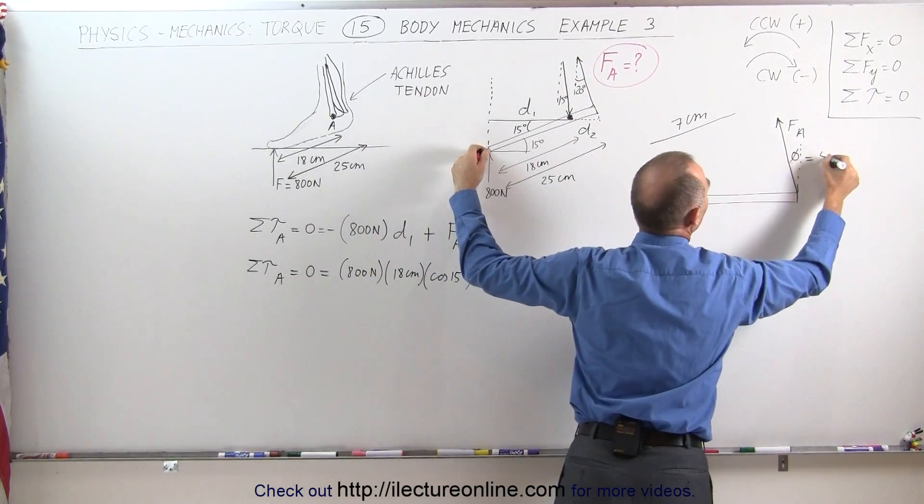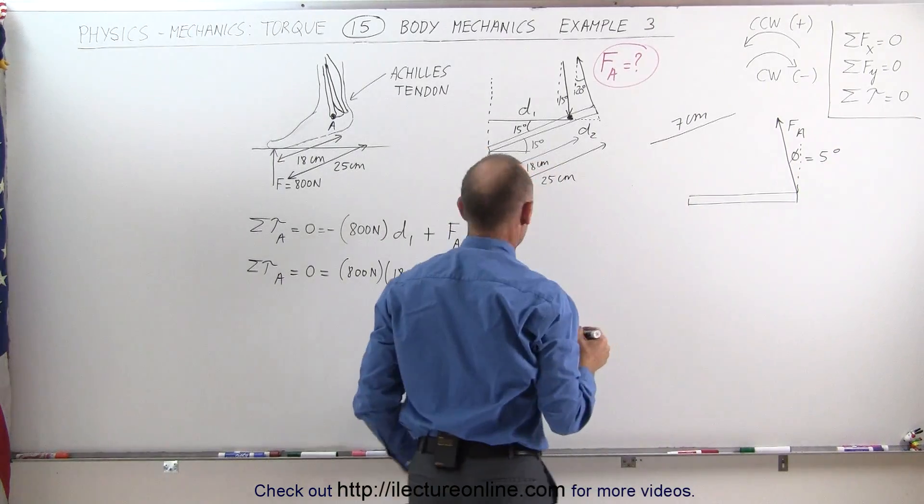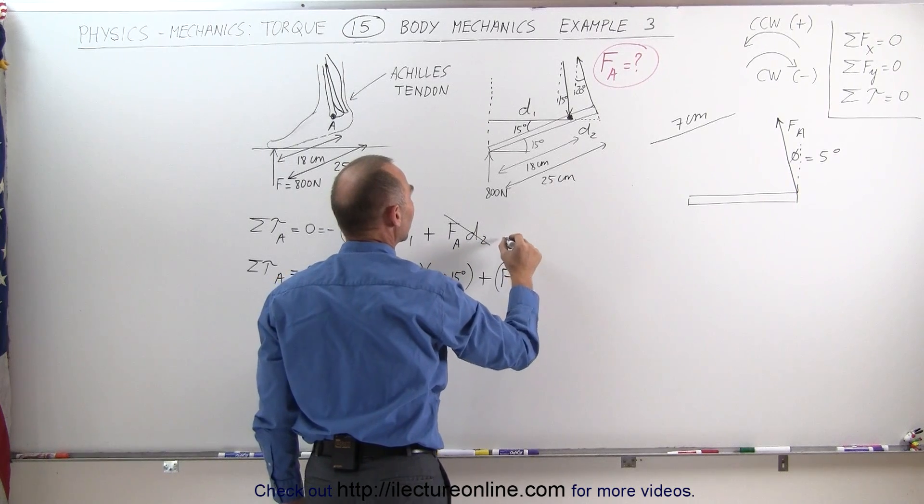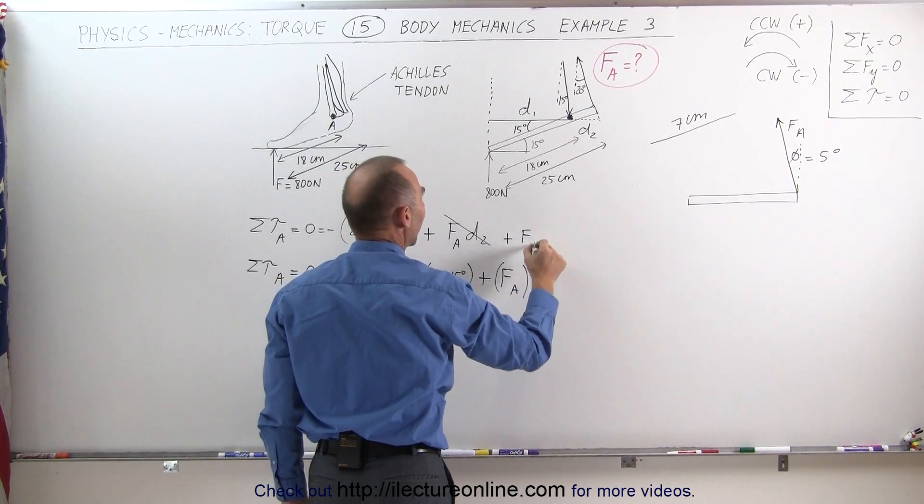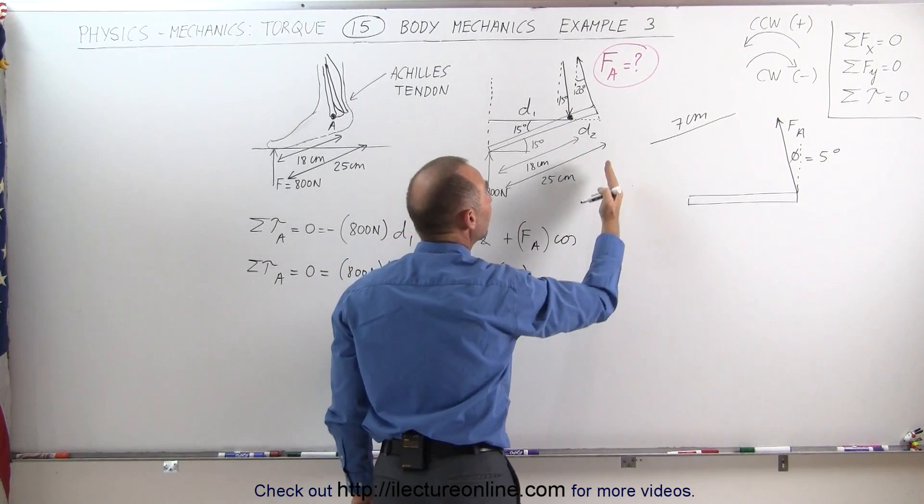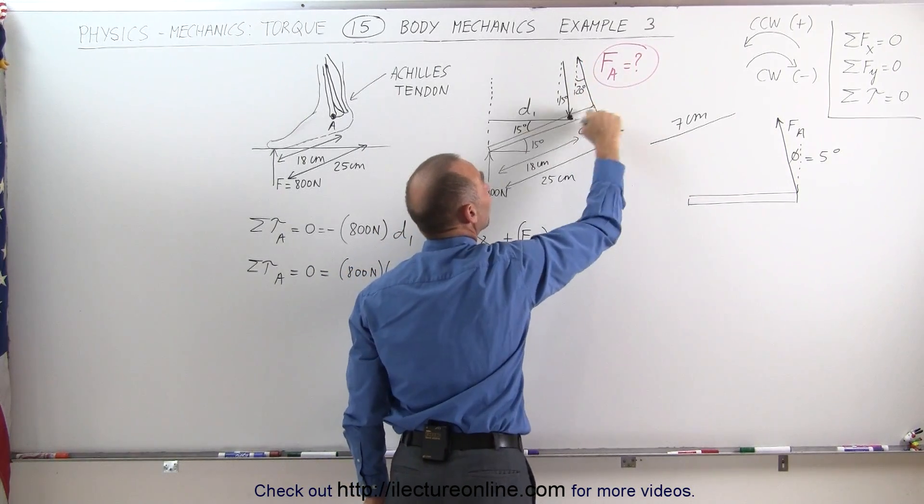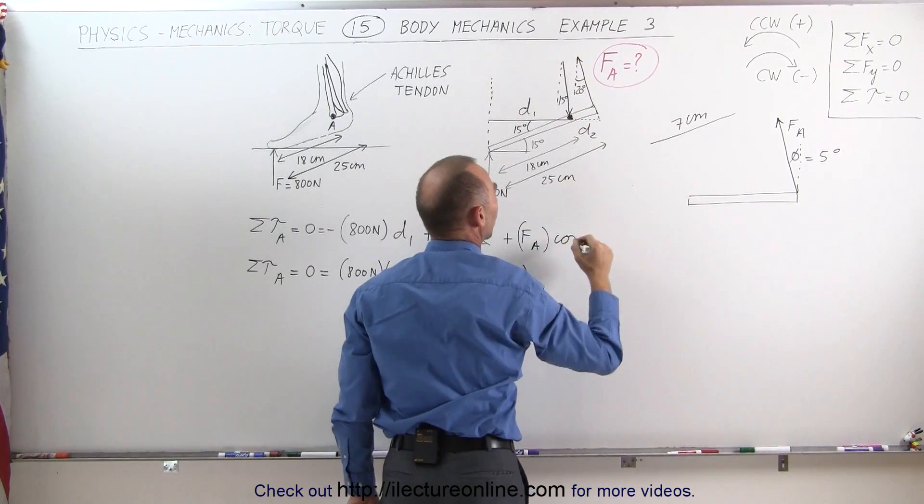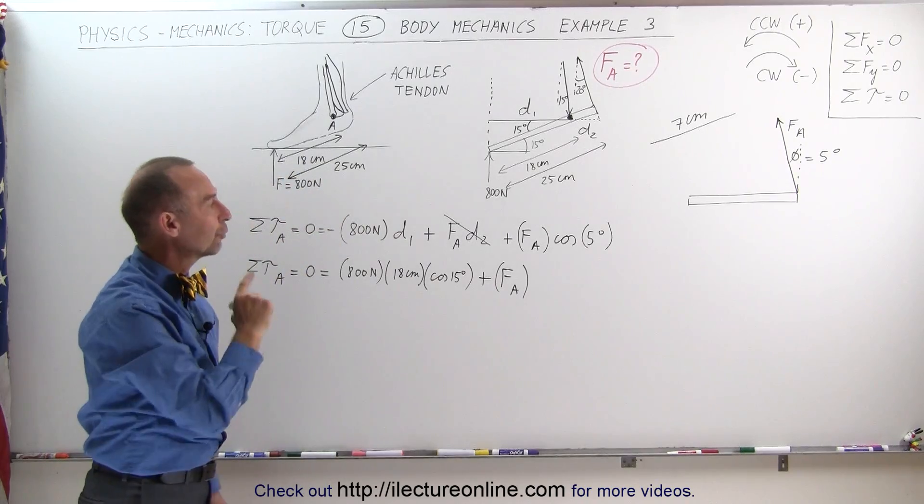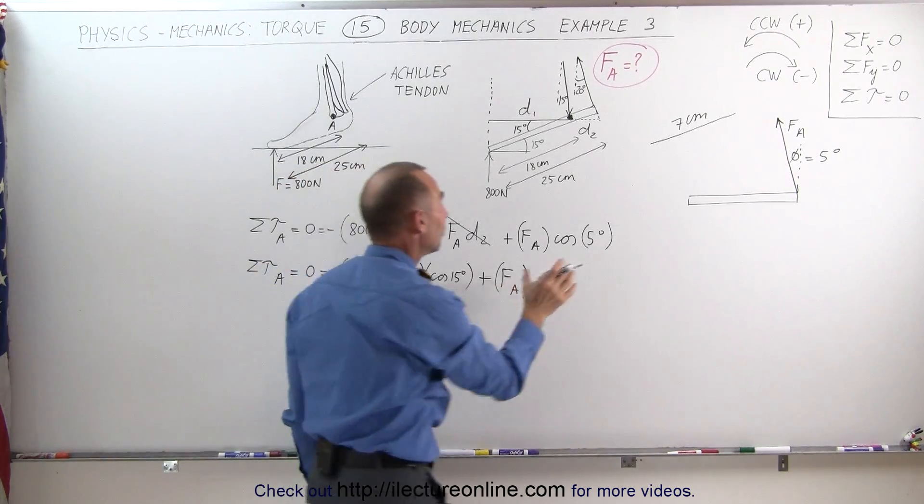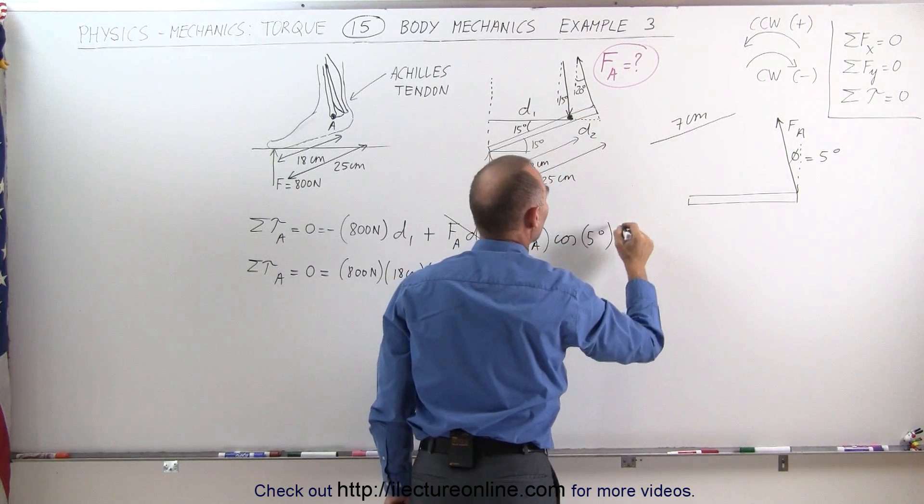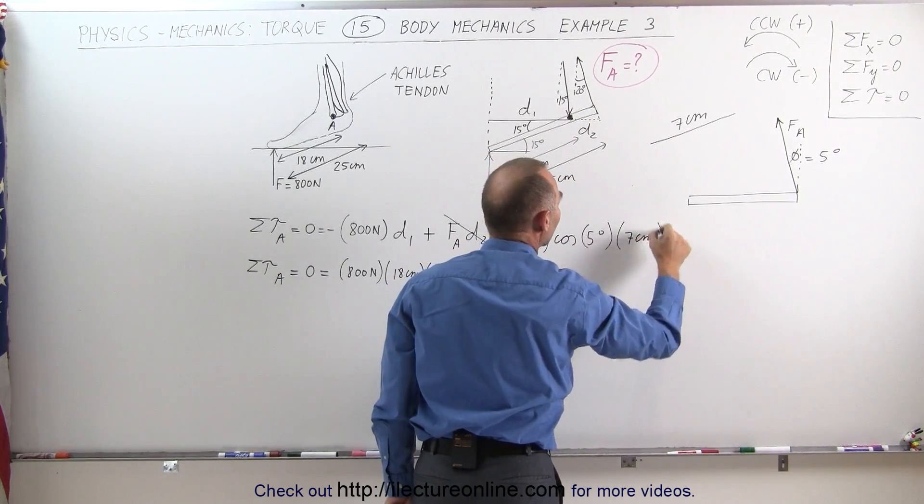So instead of calling this FA times D2, what I'm going to do instead is call this plus FA times the cosine of the angle between the vertical relative to the foot and the direction of the force which in this case would be 5 degrees, and of course times the distance from the pivot point along the foot, so times 7 centimeters.